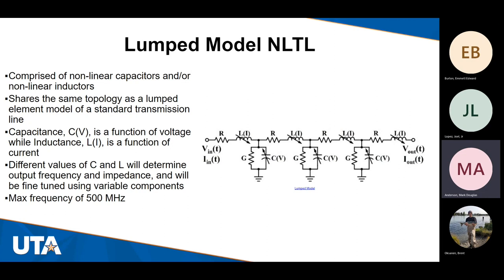In NLTLs, there are many different approaches such as gyromagnetic, but specifically we want to do a lumped model. This makes it easy to construct, test, and design around, and it achieves a target frequency in the 500 megahertz range, which is perfect for our use case. Looking at the model on the right, it's a standard transmission line model, but instead of natural capacitance and inductance values, we are inserting actual capacitors and inductors. In our case, the capacitors will have nonlinear tendencies, which gives us the desired effect.